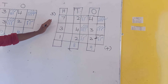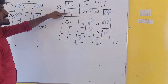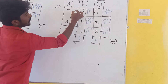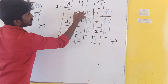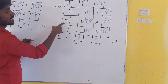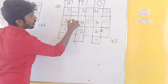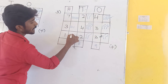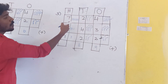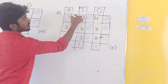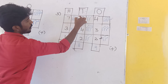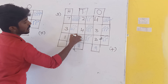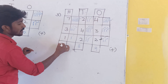Then last one, 100s value. First number: draw 7 lines. Second value is 3, draw 3 lines. Last value is 1, draw 1 line. Now add these lines: 1, 2, 3, 4, 5, 6, 7, 8, 9, 10, 11. Answer is 11.